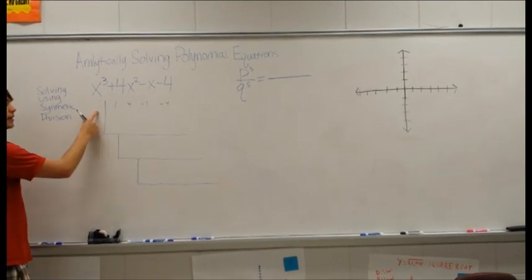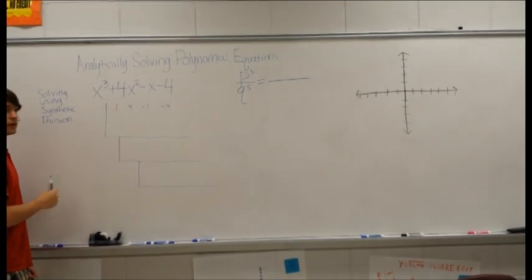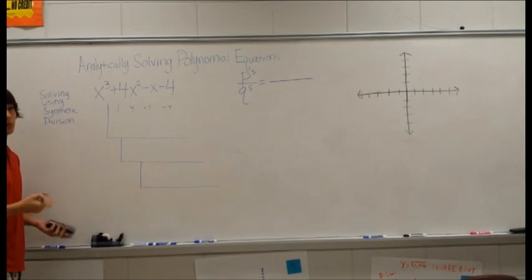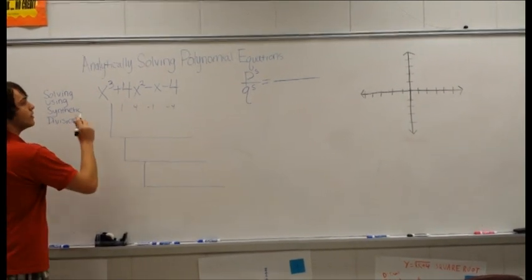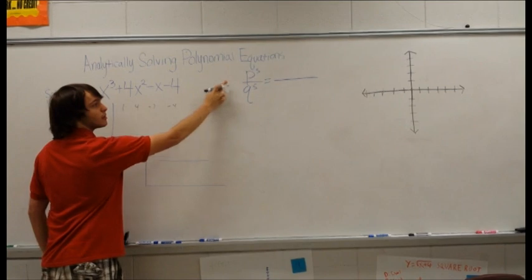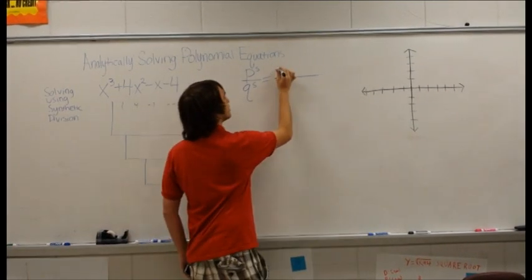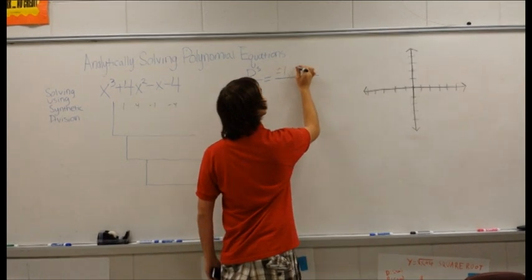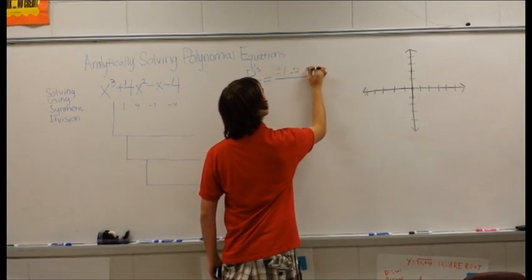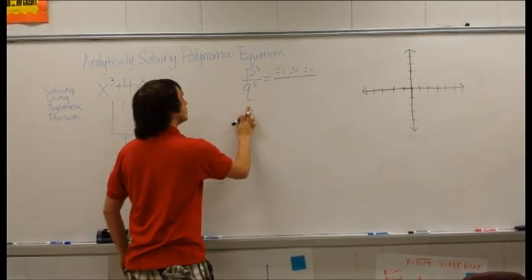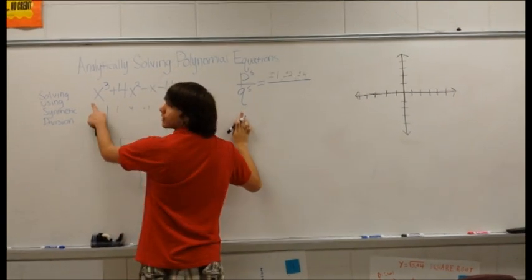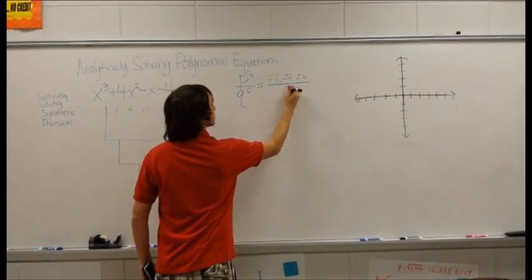Then, in order to find a factor to divide by, to find out whether it is a factor, you do the p's over the q's, where the p's are the factors of the constant, which would be ±1, ±2, and ±4. And the q's are the factors of the leading coefficients, which would just be ±1.